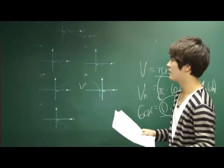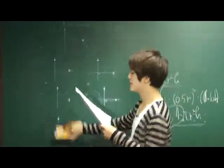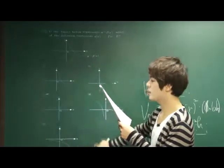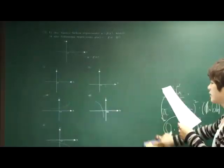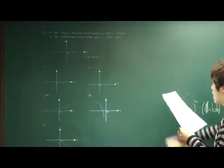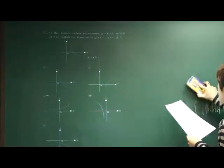Let's move out to number 37. 37 says, if the figure below represents y = f(x) function, which of the following represents g(x)? Negative f(x - 2).